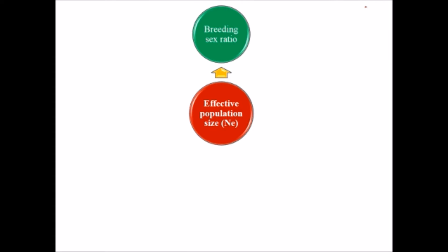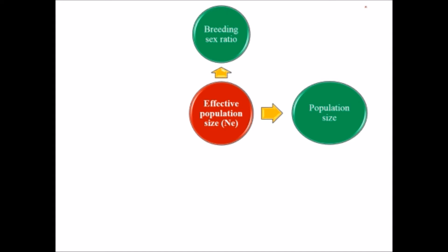Effective population size is influenced by several factors. Regarding breeding sex ratio: if one sex is rarer in number, that sex is more likely to mate and reproduce, so the rarer sex dominates the gene pool. Regarding population size: if a particular group of species is very small in number, it will dominate the gene pool. Similarly, within breeding groups, the rarer group dominates the gene pool because it has more chances to pass almost all its genes to the next generations.